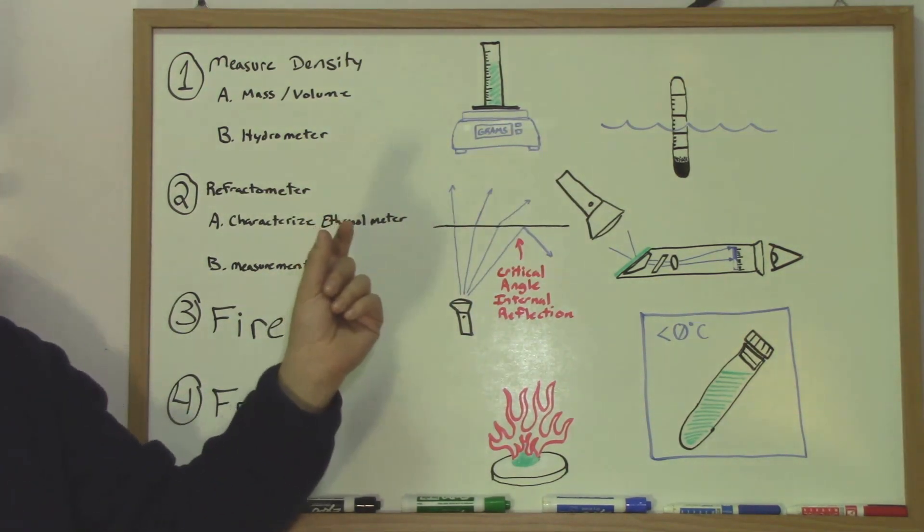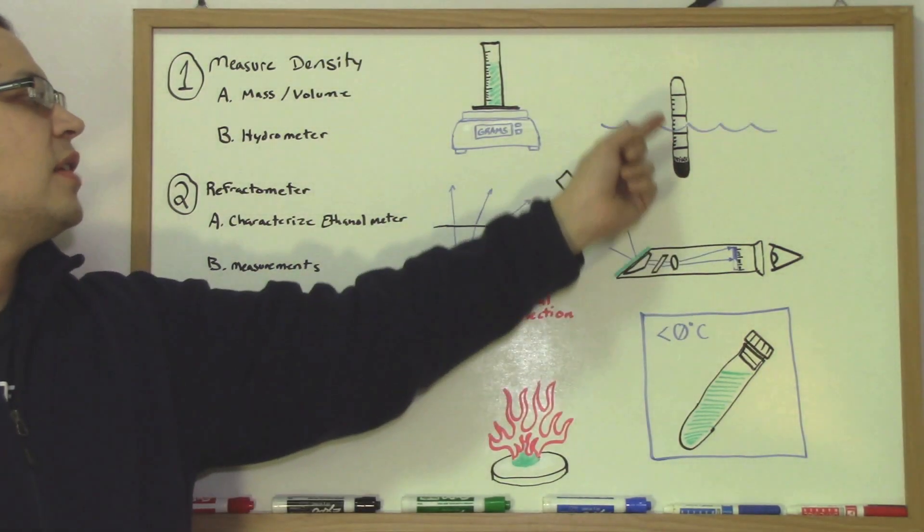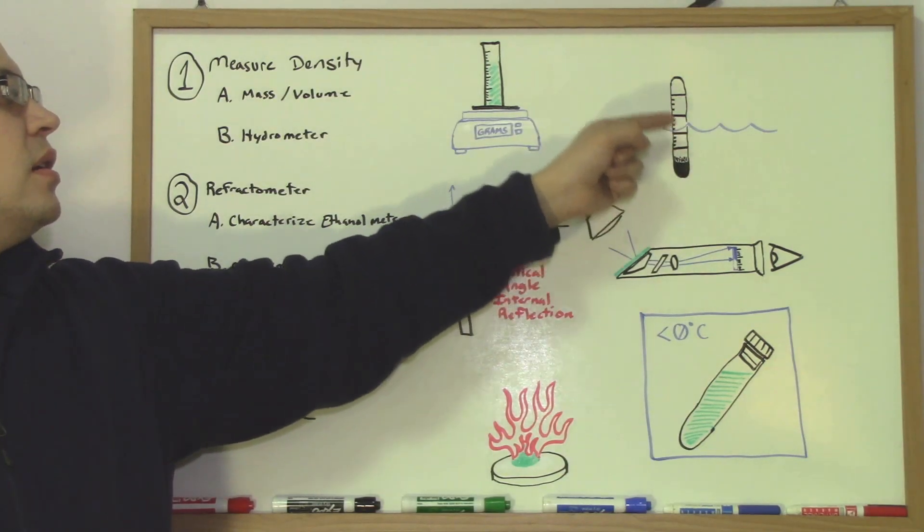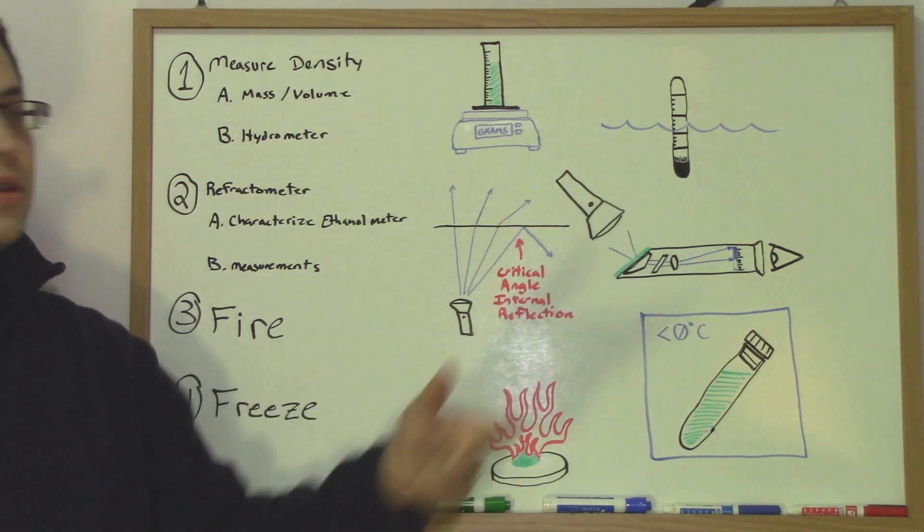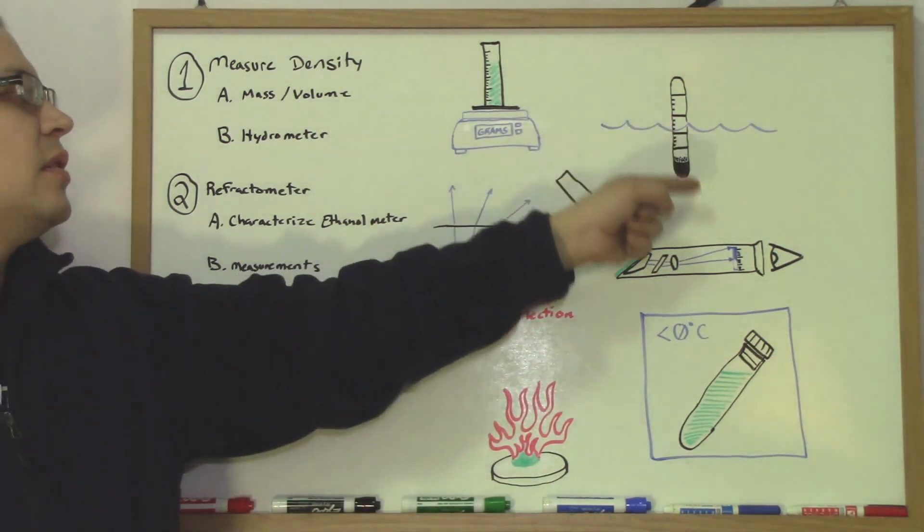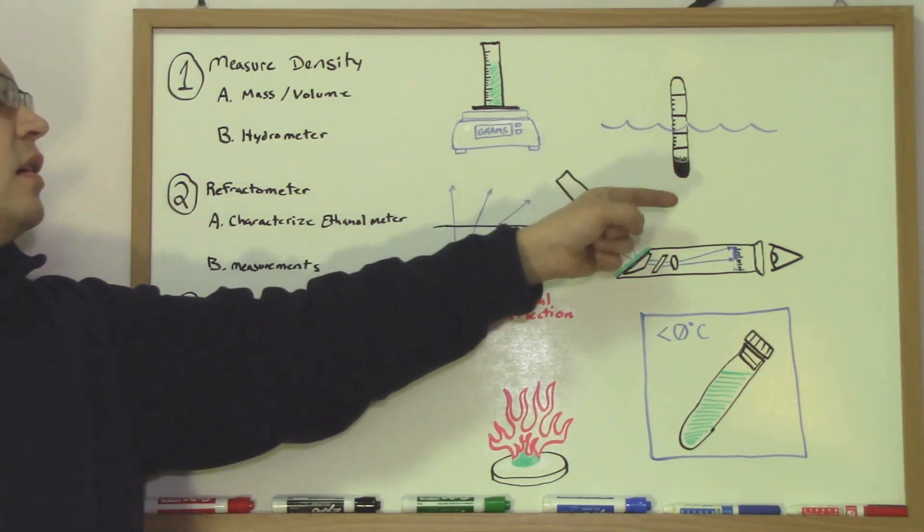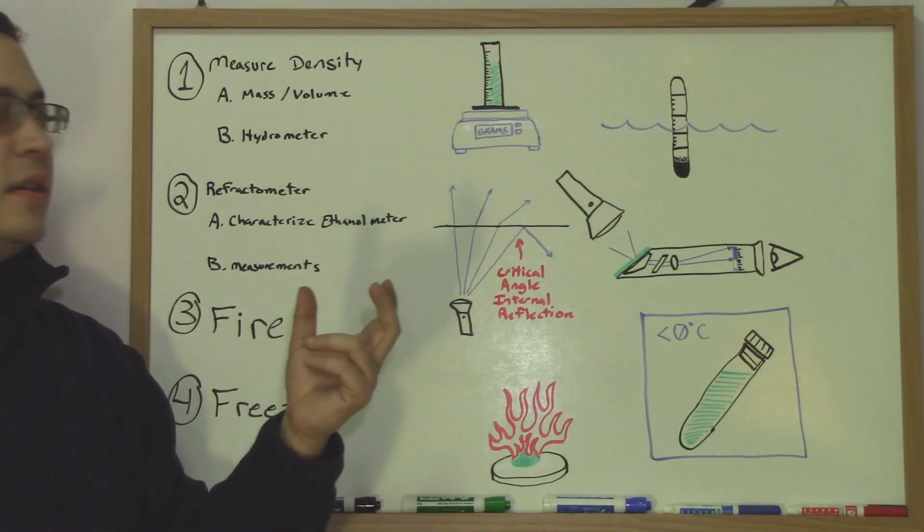A hydrometer has a weight in the bottom with maybe some beads or metal beads to get a precise calibration. They have a scale, and then you can get the specific gravity.